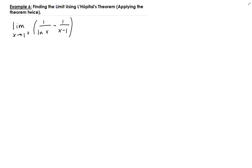This is another example where we need to apply L'Hôpital's theorem twice. Let's do a direct substitution first. As x approaches 1 from the right, 1 over ln(x) gives us 1 over something approaching 0, and 1 over (x-1) also approaches 0, so we get infinity minus infinity. This is an indeterminate result, so we proceed by applying L'Hôpital's theorem.